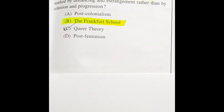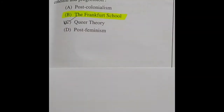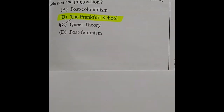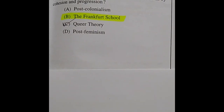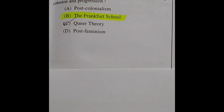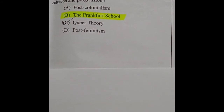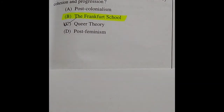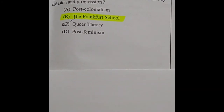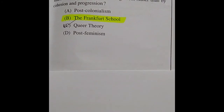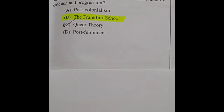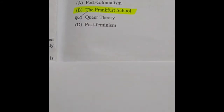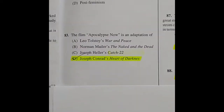Question 82: With which theoretical movement can one associate the idea that a work of art should ideally be marked by distancing and estrangement rather than by cohesion and progression? The right answer is option B: the Frankfurt School.